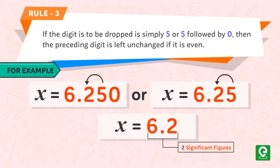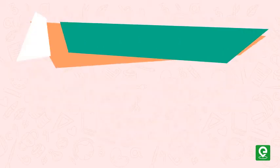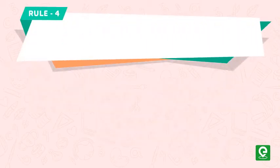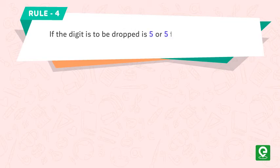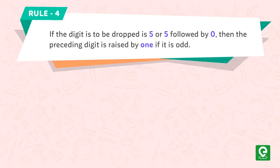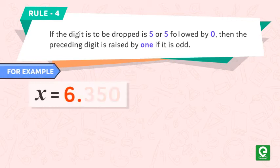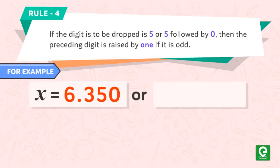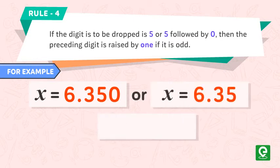Rule number four: if the digit to be dropped is five or five followed by zeros, then the preceding digit is raised by one if it is odd. For example, x = 6.350 or x = 6.35 becomes x = 6.4 after rounding off, which has two significant figures.